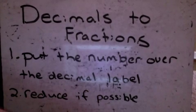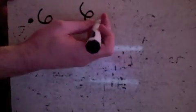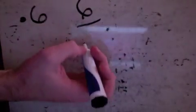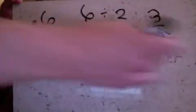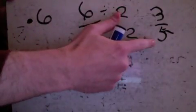Here's the first decimal — everybody should know this is six-tenths. When I say put the number over its label, if you read this decimal it sounds exactly like a fraction: six-tenths. So I put the six on top and 'tenths' on the bottom, giving us 6/10. Now I reduce that by dividing both by two to get three-fifths.